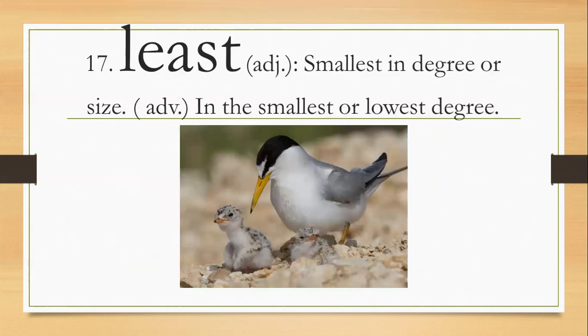Number 17. Least, L-E-A-S-T. It's an adjective meaning smallest in degree or size. As an adverb, the smallest or lowest degree. In this case, we have a bird that has two chicks. One looks kind of big, but the other one looks smaller. So that's the least bird. It looks like he was born last. Or, at least you could have decency to say thank you when somebody does something for you. At least, it's just a small thing we can do.